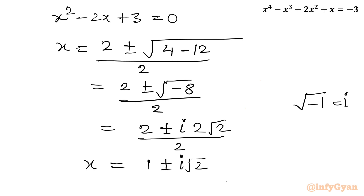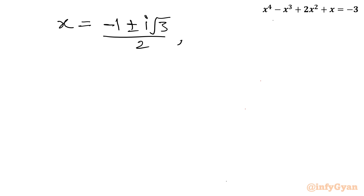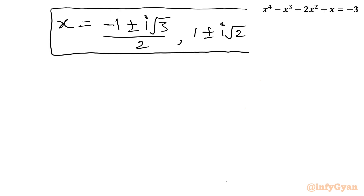So we have 4 complex solutions in total. From the first quadratic: x = (−1 ± i√3) / 2. From the second quadratic: x = 1 ± i√2. These are the complex solutions — the overall solution set for the given quartic equation.